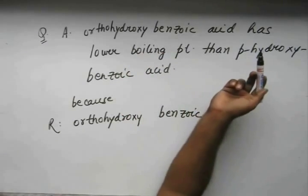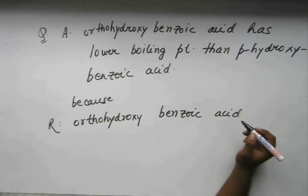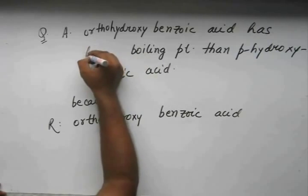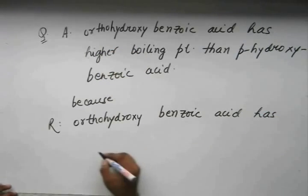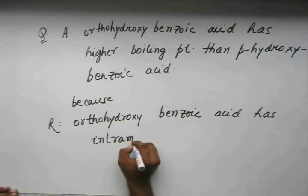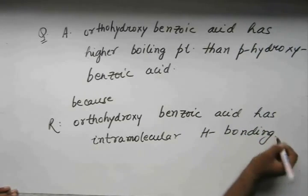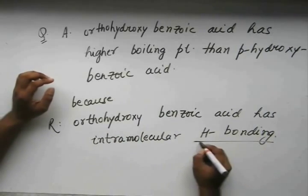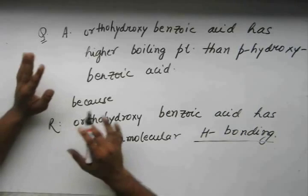The assertion says ortho hydroxy benzoic acid has higher boiling point than para hydroxy benzoic acid. The reason given is that ortho hydroxy benzoic acid has intramolecular hydrogen bonding. I would suggest you pause the video for a while and think upon the problem — we have dealt with hydrogen bonding, so it is of direct relevance to the theory we just learned. Try this question on your own.